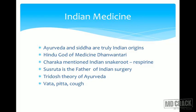Charaka mentioned in his early treatise the Indian snakeroot, known as Reserpine. Students of pharmacology know this as an anti-hypertensive drug, though it is not used these days. In those days it was a very good anti-hypertensive drug, and it was described as early as when Charaka lived in India — that was his contribution.